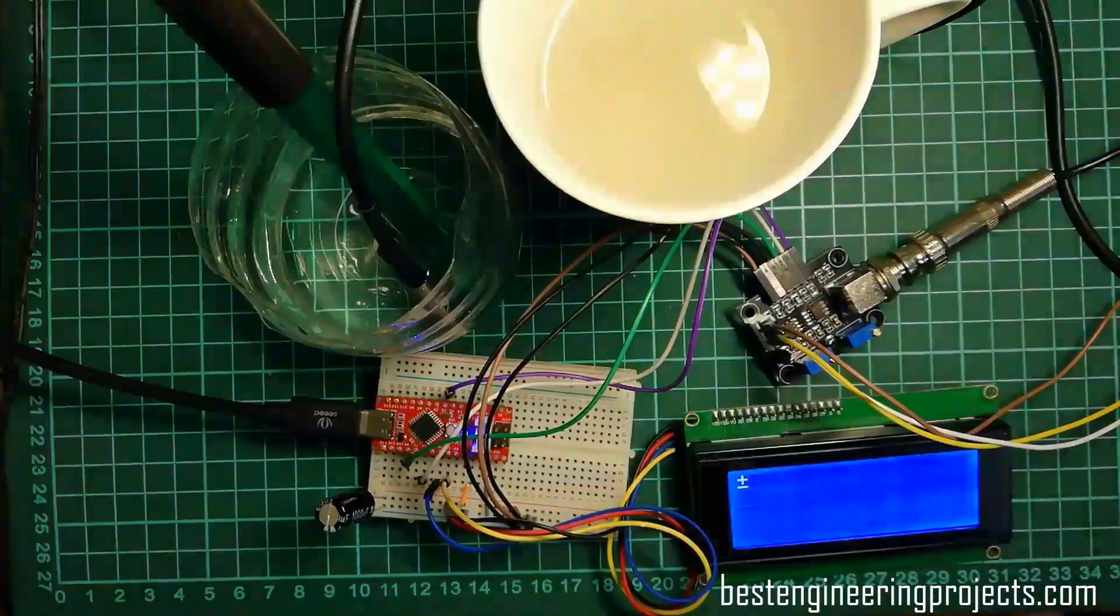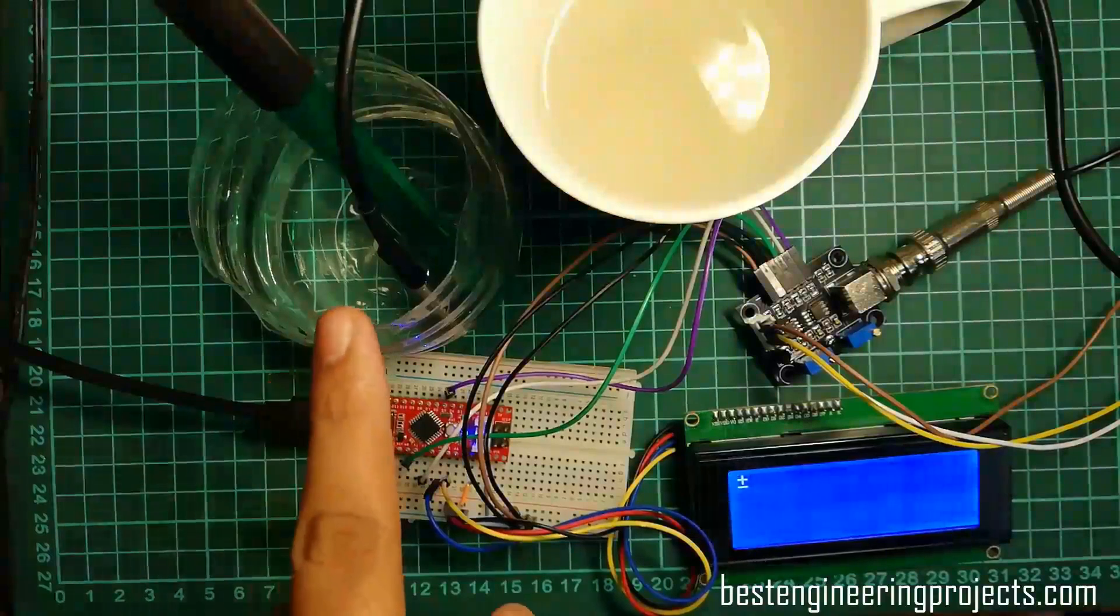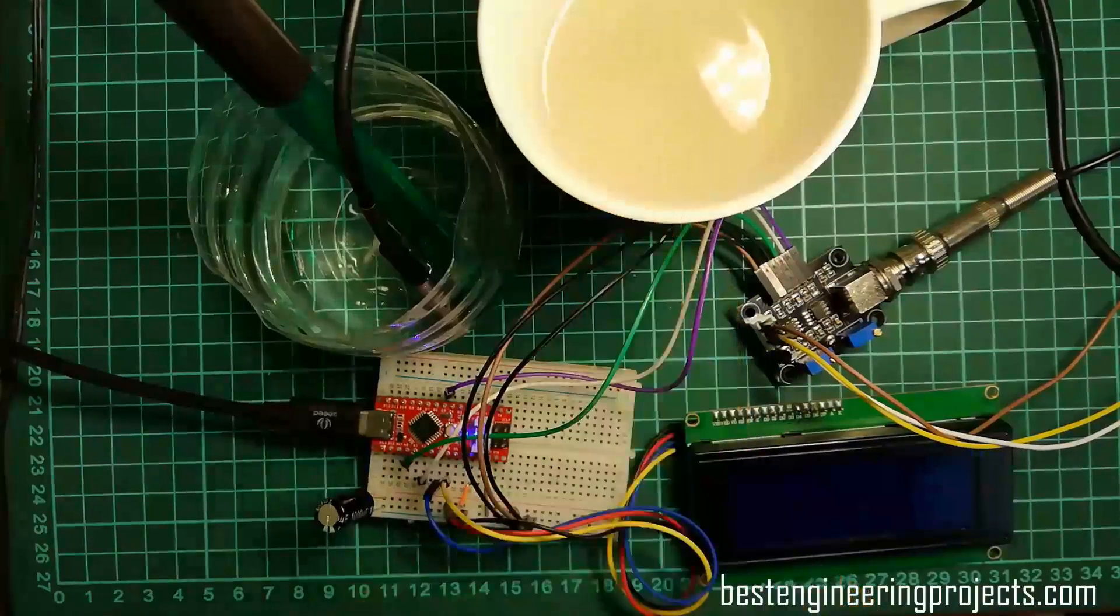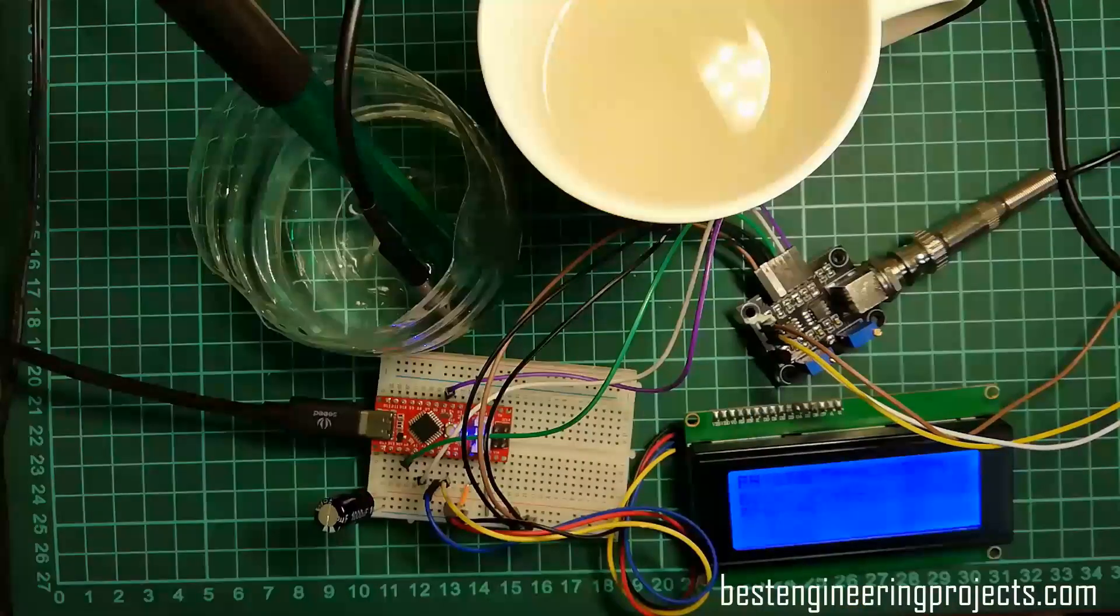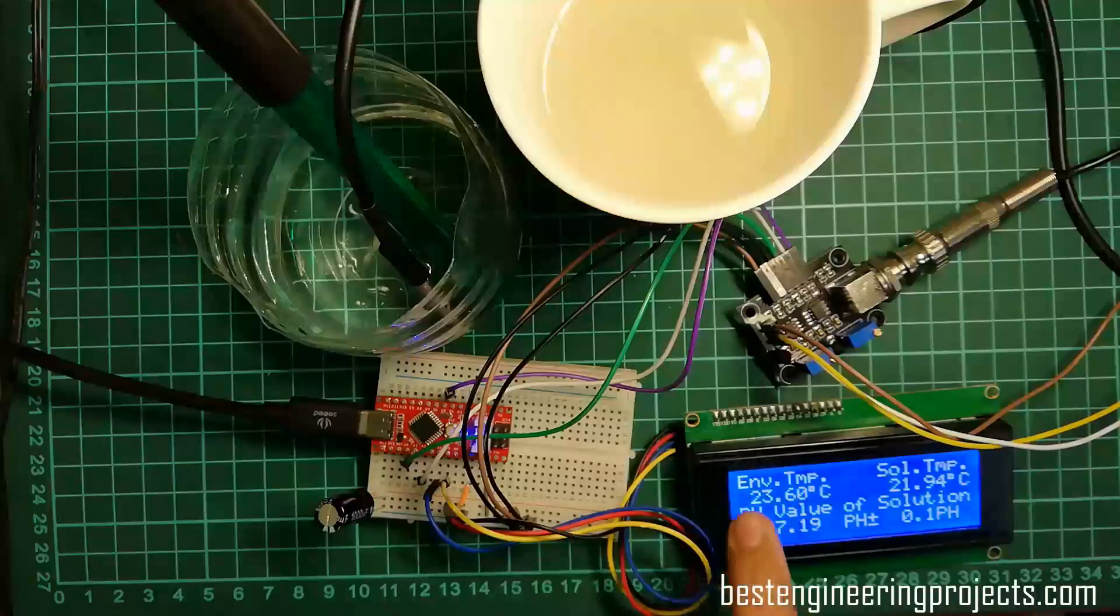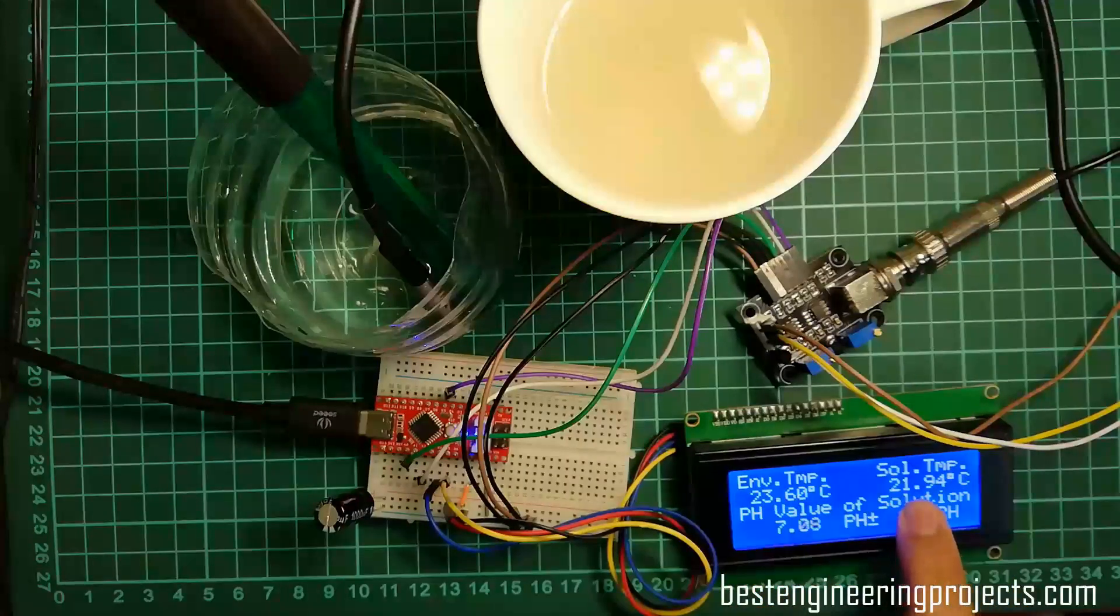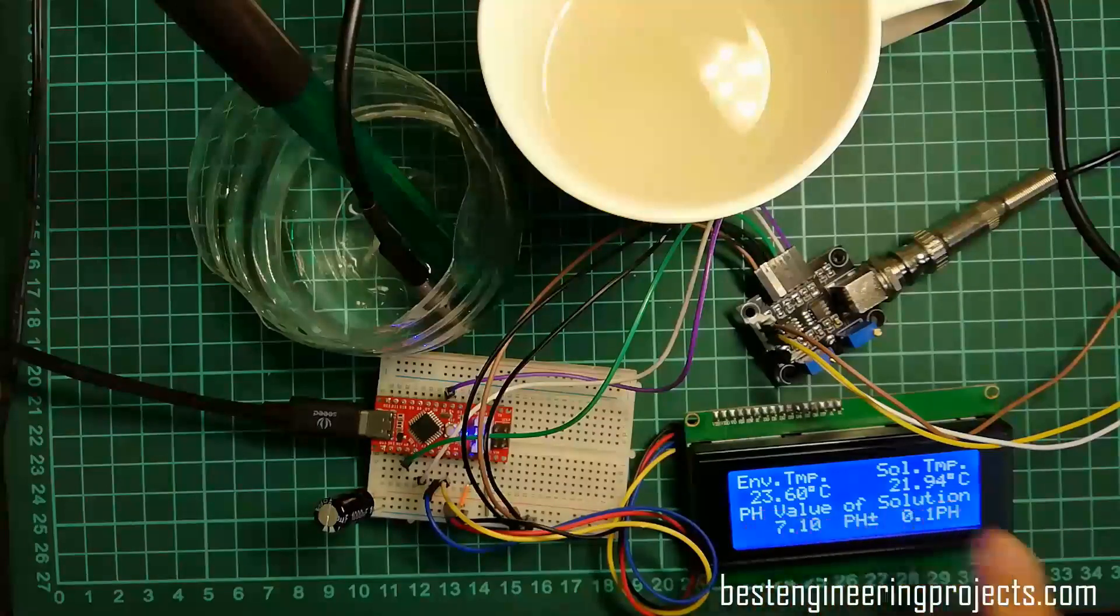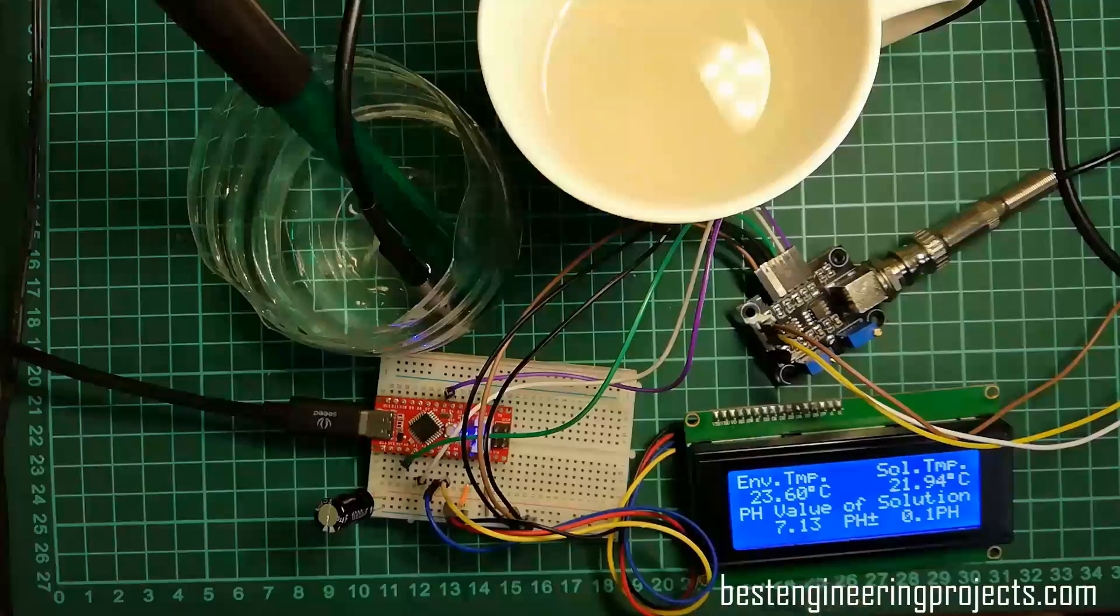Now, let's see the output of this project. Here, for demo purpose, I am going to measure the pH value of this water and pH value of lemon water solution. Download the code to your Arduino from the link in description section. As you can see here, environment temperature is about 23.60 degrees Celsius, solution temperature is 21.94 degrees Celsius. pH value of solution is 7.10 plus minus 0.1 pH. This 0.1 pH plus minus tolerance is due to the temperature difference between environment temperature and solution temperature being less than or equal to 5 degrees Celsius. It needs about 2 minutes to stabilize the reading.